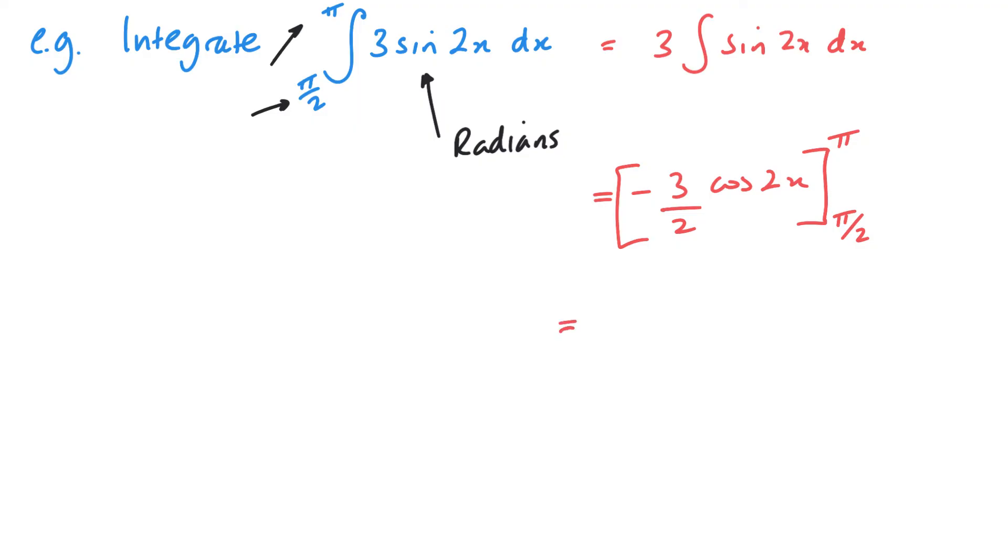So here we've got now minus 3 over 2 cos 2π when I substitute π in, minus minus 3 over 2 cos, and we've got 2 times π by 2. So the 2's will cancel, just leaving me π there. And then you can use your calculator, or in this case some of your knowledge: cos of 2π is 1 and cos of π is negative 1. So this will change to a plus 3 over 2. That means we've got minus 3 over 2 minus 3 over 2. So we've got minus 6 over 2 or minus 3.